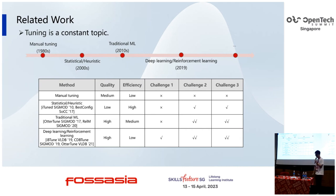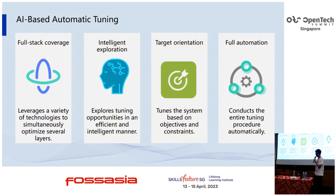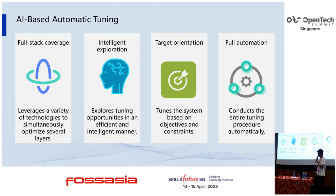There is no single method that performs best under all dimensions. We want to use AI to perform automatic tuning. There are several advantages: full-stack coverage, leveraging a variety of technologies to optimize several layers; intelligent exploration, deploying tuning opportunities in an efficient and intelligent manner; target orientation, tuning the system based on objectives and constraints; and full automation, conducting the entire tuning procedure automatically.